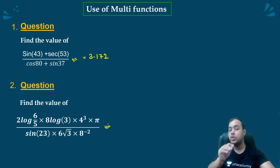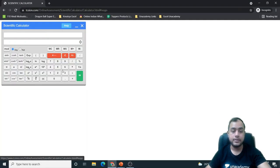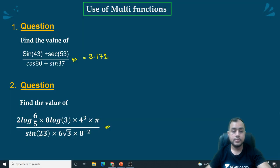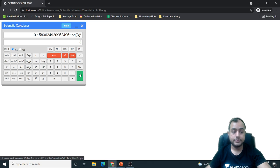Similarly, let's try this. I won't be using memory function. I will be using the bracket part. 2 log 6 by 5. Let me write 6 by 5. I will take log into 2. Then into 8 log 3. Into 3 log into 8 into 4 cube into pi. This is the value of the numerator.